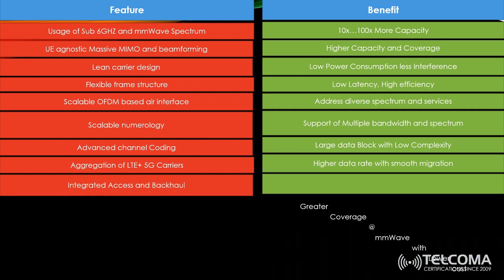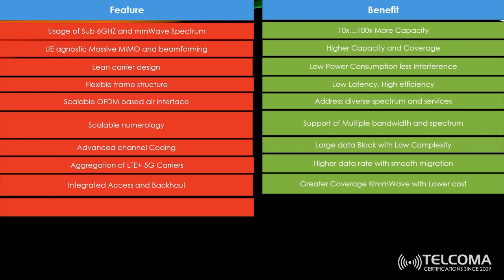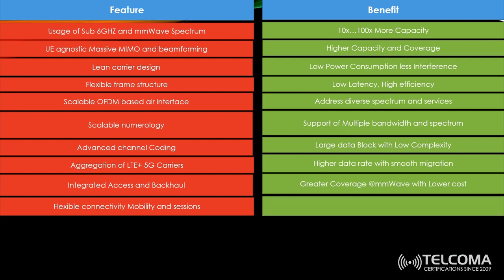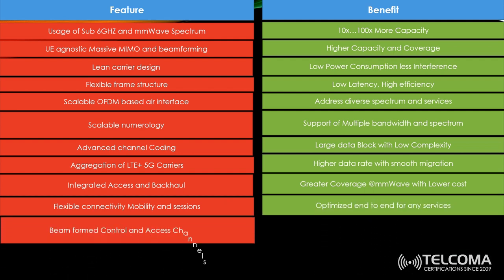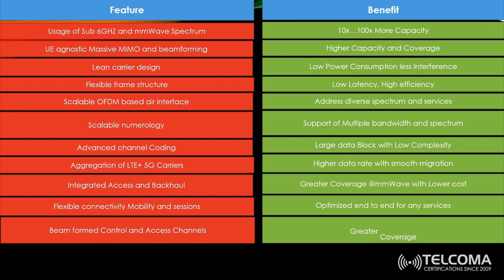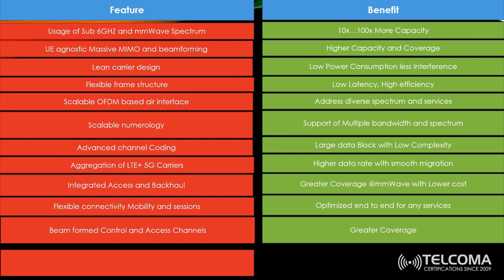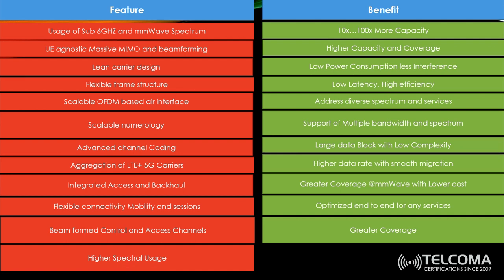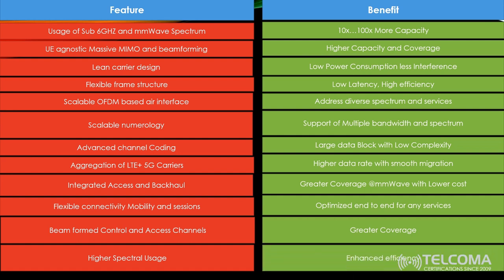Aggregation of LTE and 5G carriers will enhance speed and help smooth migration. Integrated access and backhaul will help provide greater coverage at millimeter wave with lower cost. Flexible connectivity and mobility in the session will help deliver end-to-end services. Beamforming for control and access channels will also enhance coverage, and higher spectral efficiency will enhance overall efficiency.